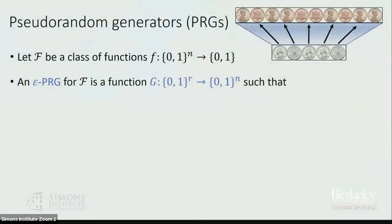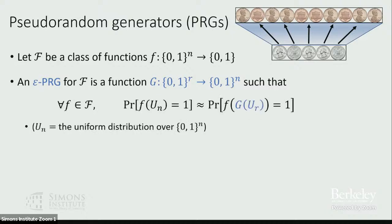A pseudorandom generator is a function that stretches a short, truly random seed out to a long pseudorandom string. What we mean by that is that for every Boolean function f in some class script F, the acceptance probability of f is approximately the same whether you plug in truly random bits or pseudorandom bits from the generator.